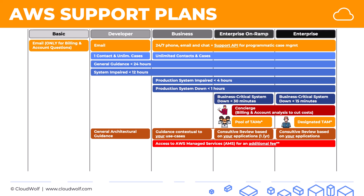In the business, enterprise on ramp, and enterprise plans, you get access to AWS Managed Services — or AMS — for an additional fee. I actually had a question about this on the exam, so remember what AMS means: you are able to augment your existing team by adding resources from the AWS side. You get a cloud service delivery manager, a cloud architect, and access to the AMS security team. They won't be your employees, but they'll be available to help you build things, at an additional cost.